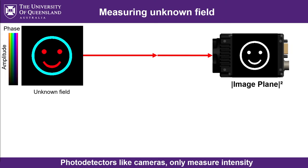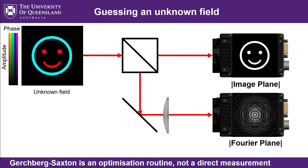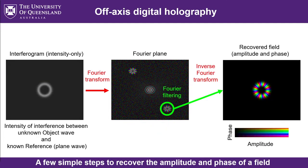In an earlier video we looked at the Gertzberg-Saxton phase retrieval algorithm. It's also a technique for measuring the amplitude and phase of an unknown field, except it's not really a direct measurement — it's really a guess. It's an optimization routine that finds a solution which seems to work. It's often very good but doesn't necessarily give you an unambiguous direct solution. Off-axis digital holography, on the other hand, unambiguously measures the phase information. It's not a guess, it's not an optimization. It's a relatively straightforward process of about four steps and then it's done.